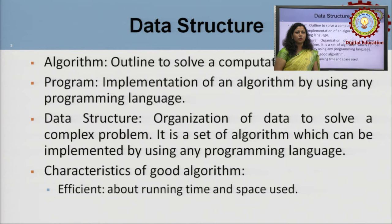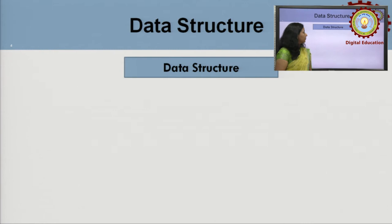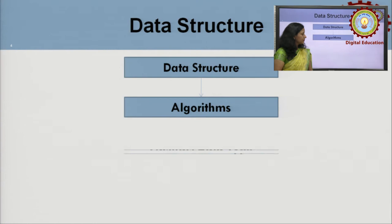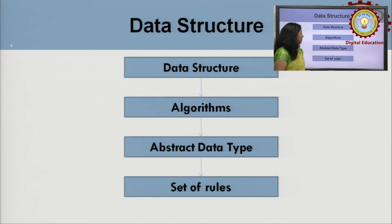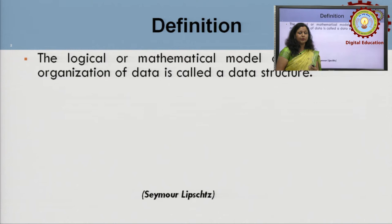Now, what is data structure? A set of algorithms is called data structure. These are called abstract data types — a set of predefined rules. So, informally, in one line: data structure is the organization of data to solve a complex problem.